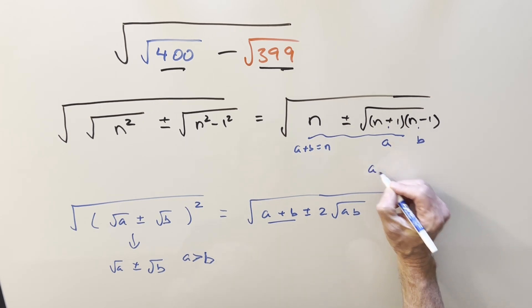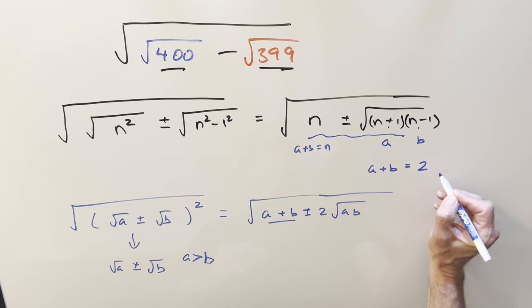But notice what happens when you add those together. a plus b, the ones cancel out, and you get two n.